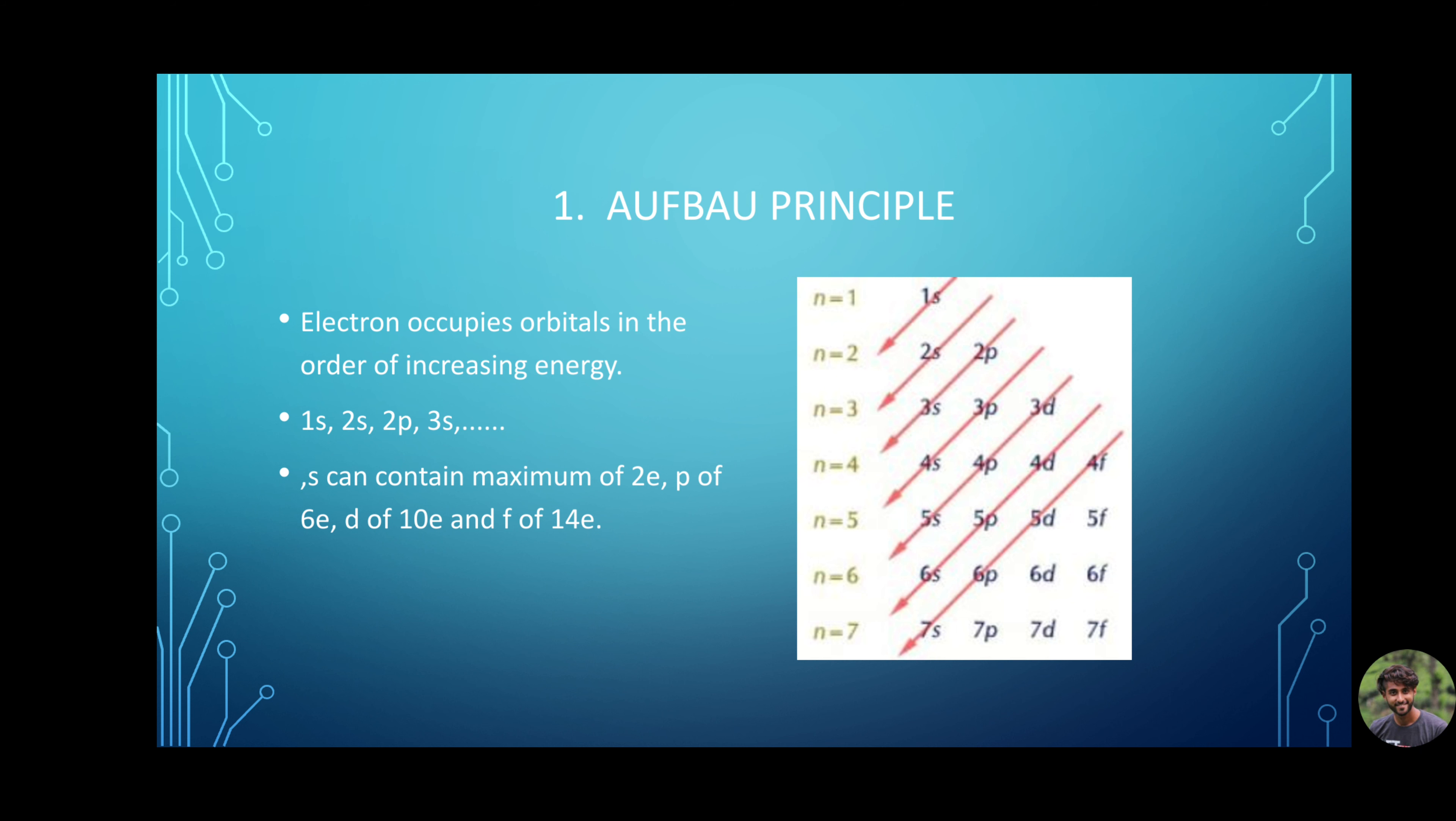S can contain a maximum of 2 electrons, p of 6 electrons, d of 10 electrons and f of 14 electrons. Here, 1, 2, 3 represent the specificity, which represent the shell number or principal quantum number. 1s is s orbital in K shell. 2s, 2p are s and p orbitals in L shell and so on.